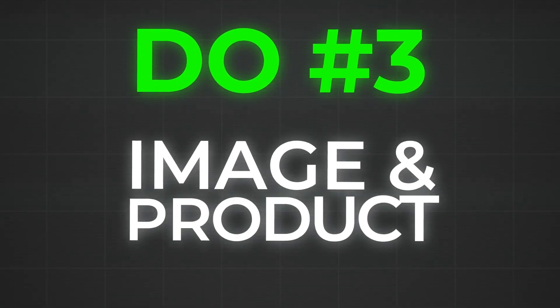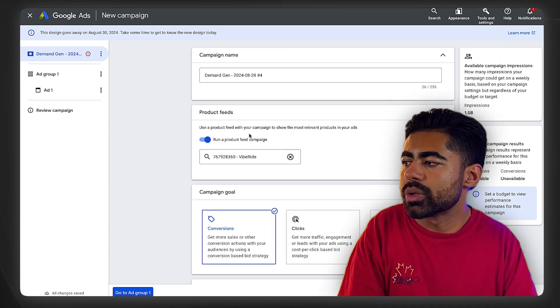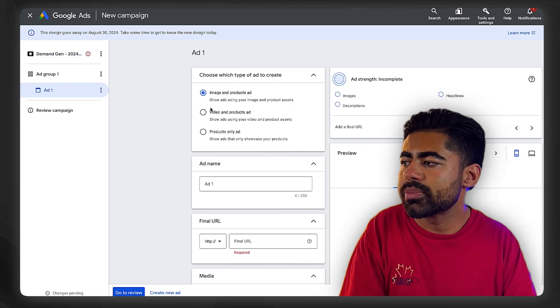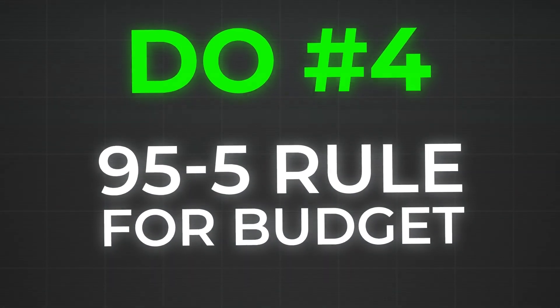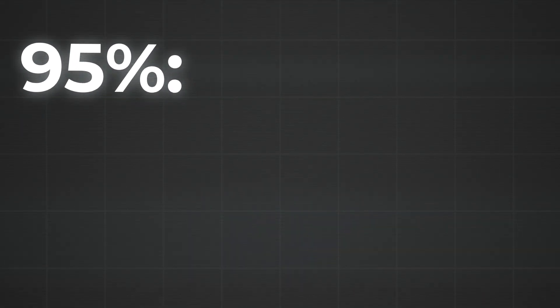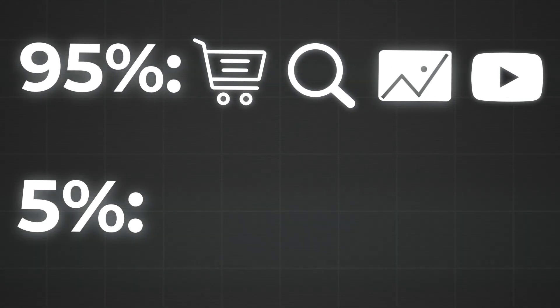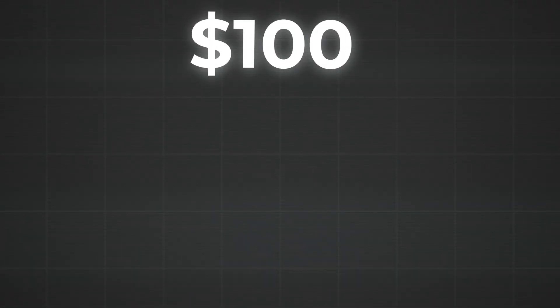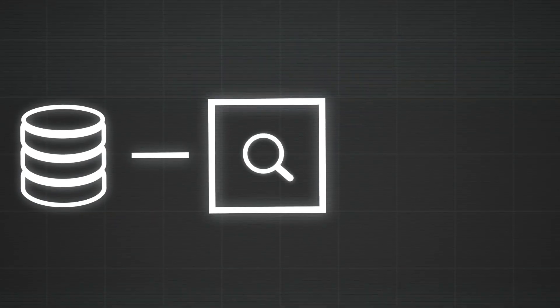Third, use image and product ads with demand gen — not video-only creatives. You want to choose the image and product ad format, not the video ad formats. Fourth, use the 95/5 rule for budget distribution: 95% of your budget should go towards other campaigns like shopping, search, performance max, and YouTube, while only 5% of your total ad spend goes toward demand gen. If you have a $100/day budget, only spend $5/day on demand gen — it's not necessary to spend more.